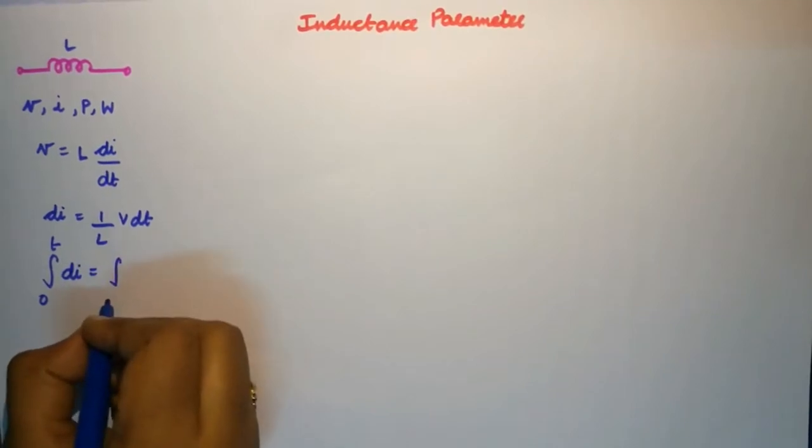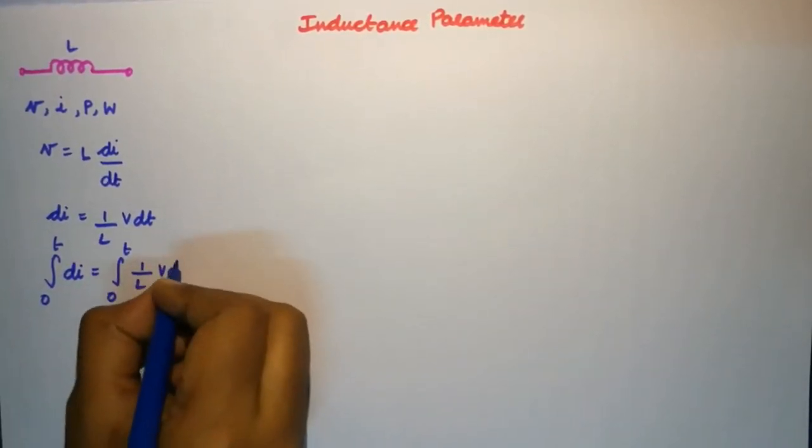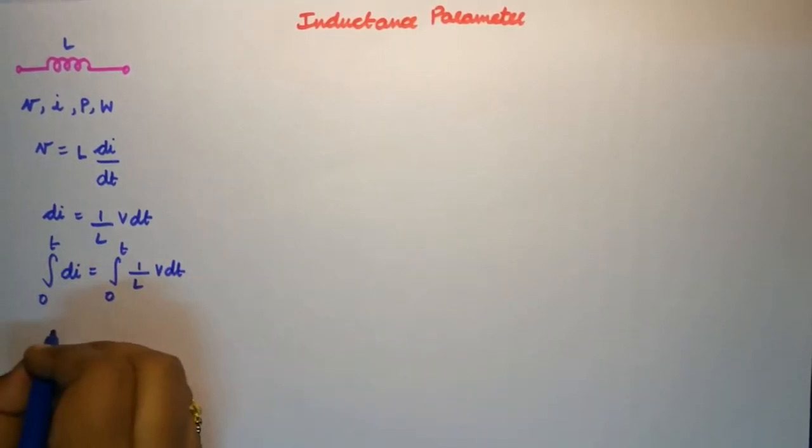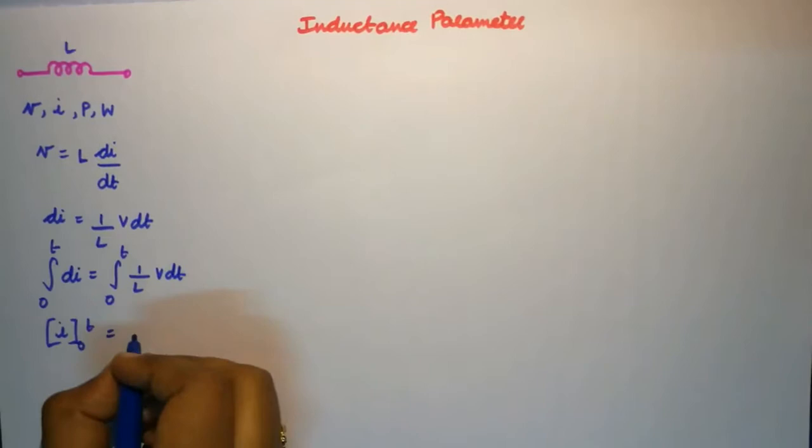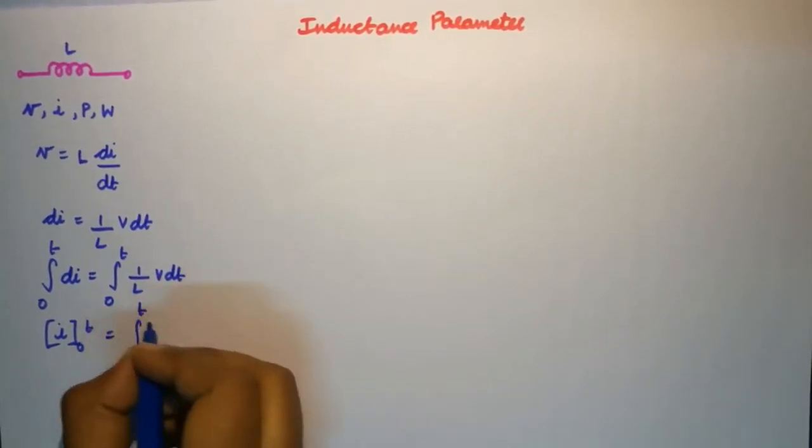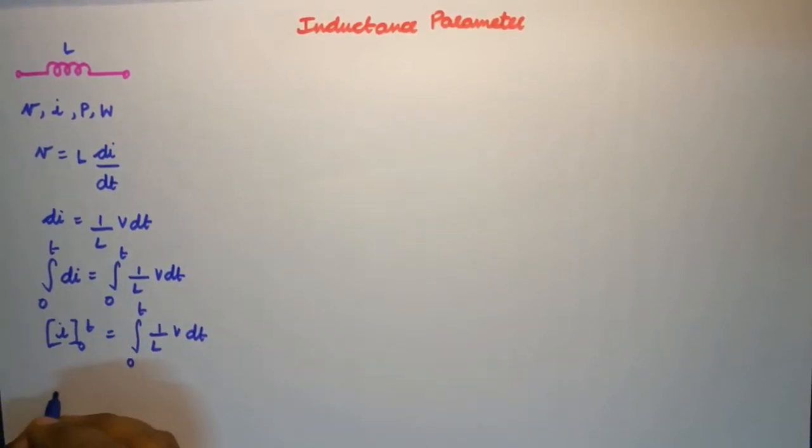Integrating on both sides, we will get i over the limit 0 to t and here let us just leave it as such for simplicity in calculation.